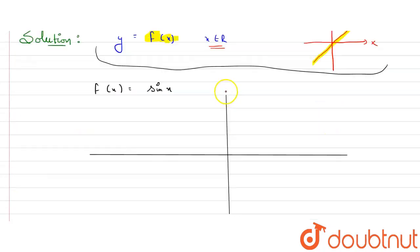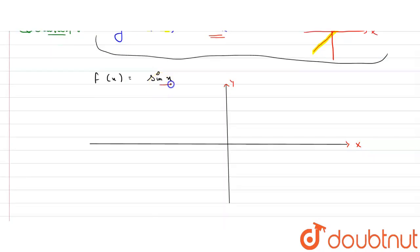We know the graph for sine x. Let me draw the graph of sine x here. This is y axis and here we'll draw x axis. We know that graph of sine x goes like this and like this.